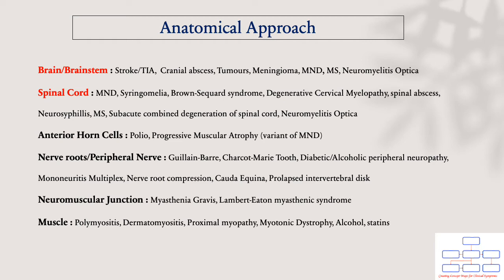The brain and brainstem as well as the spinal cord are highlighted in red because they represent your central nervous system, and any lesion arising in those structures will give you an upper motor neuron pattern of weakness.